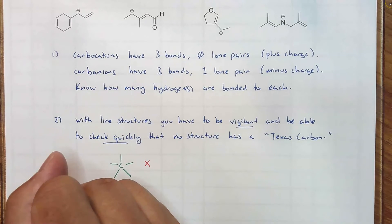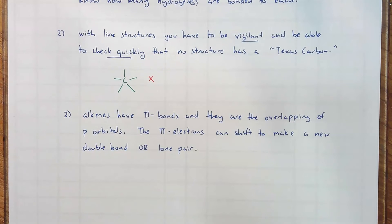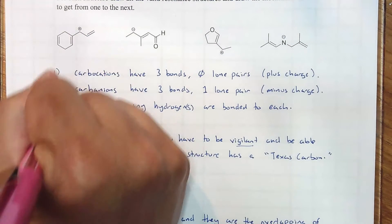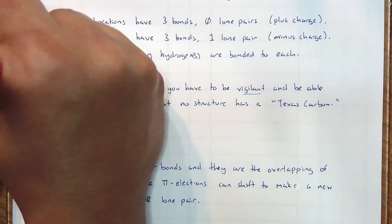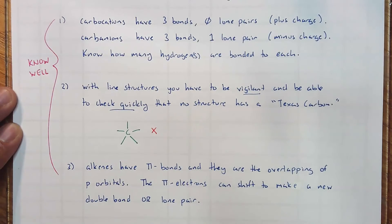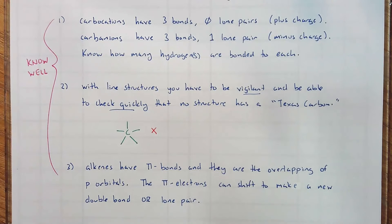Number three: pi bonds have pi bonds and they are the overlapping of p orbitals. The pi electrons can shift to make a new double bond or a lone pair. Not only do you want to know these rules, but you also want to know how and when to apply them.